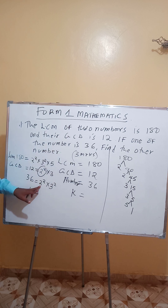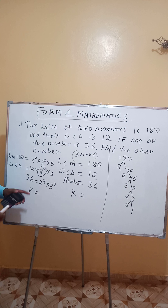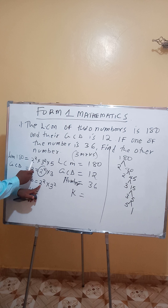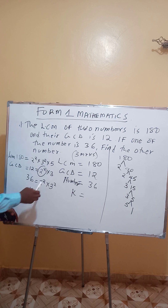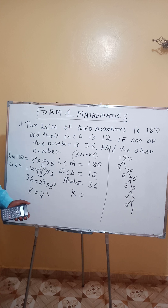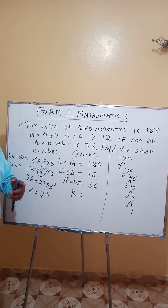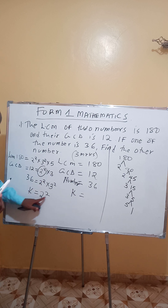Check number 36: it has 2 power 2. So the 2 power 2 in the GCD is coming from 36. Then check the LCM — it also has 2 power 2, which is the highest power. In LCM you take the highest power; in GCD you take the lowest power, but that number must be common. Since the lowest power and the highest power are both 2 power 2, our K must also have 2 power 2.